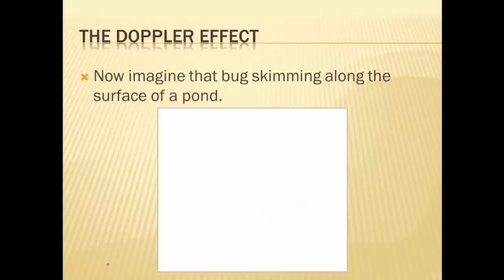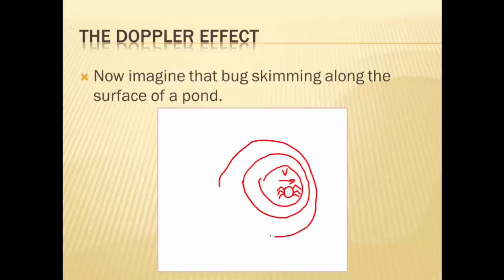But now imagine that the bug is moving in a direction. Let's say the bug is traveling this way at some velocity. Well, what's going to happen is the waves are going to start bunching up in the direction that it's traveling. Now all of a sudden, instead of concentric circles, what you're going to see is this bunching up occur right in front of the spider. And conversely, behind it, you're going to see this wavelength grow behind it.